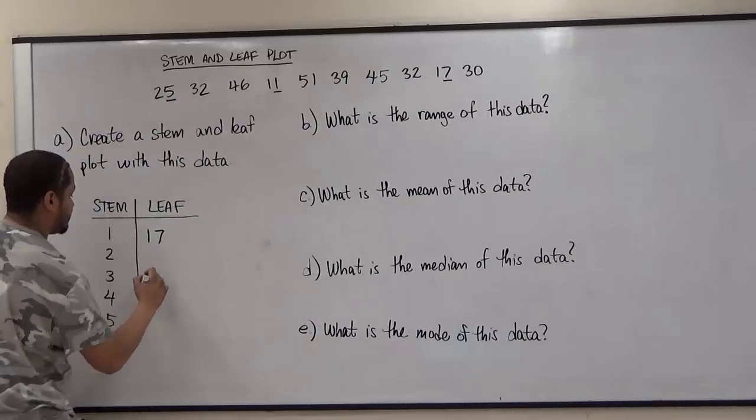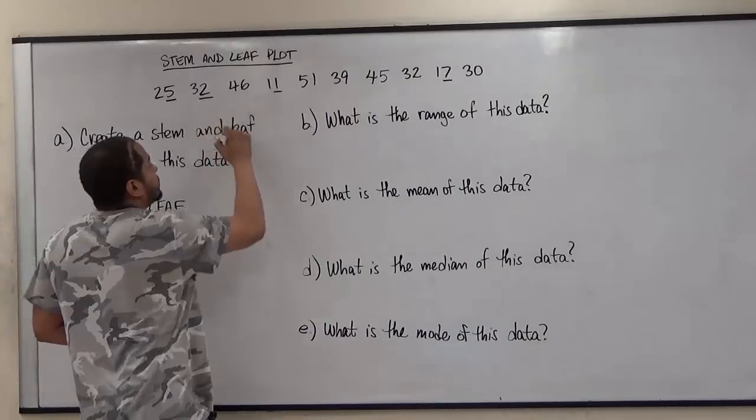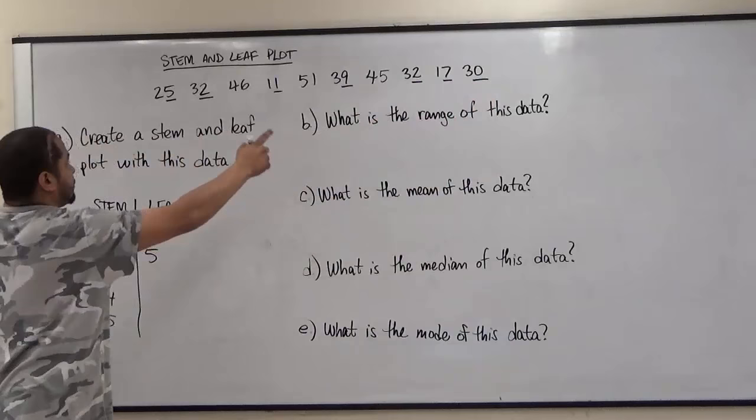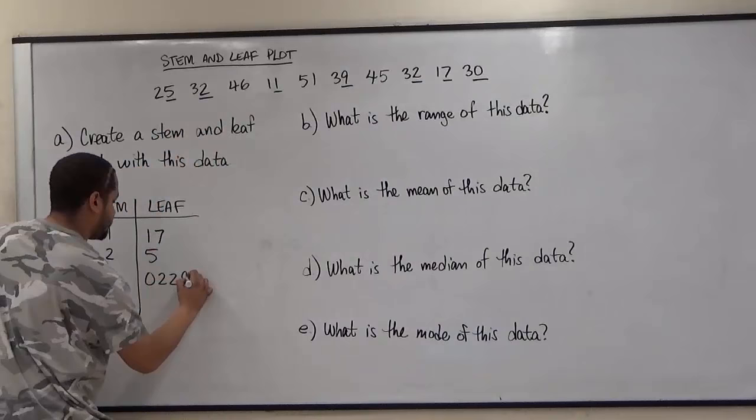Now for thirty we have a two, a nine, another two, and a zero. So we'll start with the zero followed by two twos and then a nine: zero, two, two, nine.